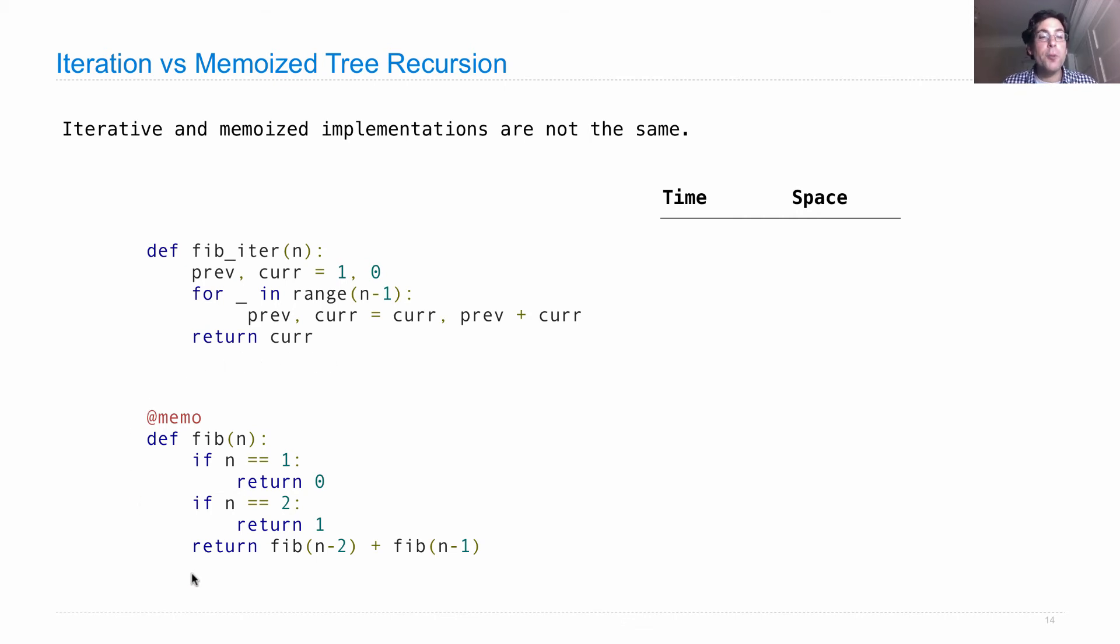Memoized tree recursion says compute fib as you would expect with these two base cases, but memoize the result, meaning once we've computed fib 4, we don't need to make recursive calls again. We already know what fib 4 is. We can use it multiple times. So what is the time and the space of these functions?